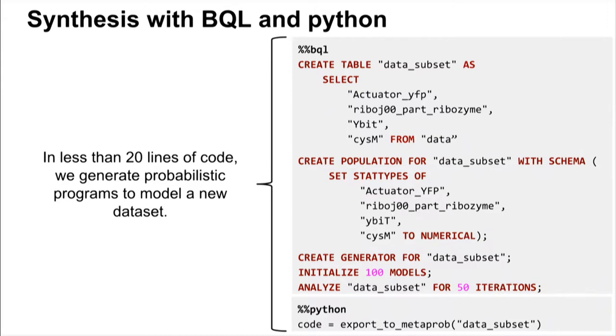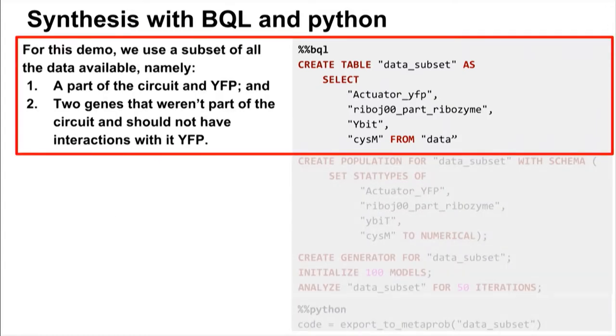Now, how does this work? And the cool thing is the synthesis in our language, we can actually write a synthesis program in only 20 lines of code. So for this demo, we only took four of the columns in the data that I just showed, mainly so that I can get the results into a slide and walk you through the entire synthesized program. We do choose the output of the circuit, a part of the circuit and two unrelated genes. So the output is called actuator YFP, the part is riboJ00 part ribozyme, and we have YBIT and CYSM.